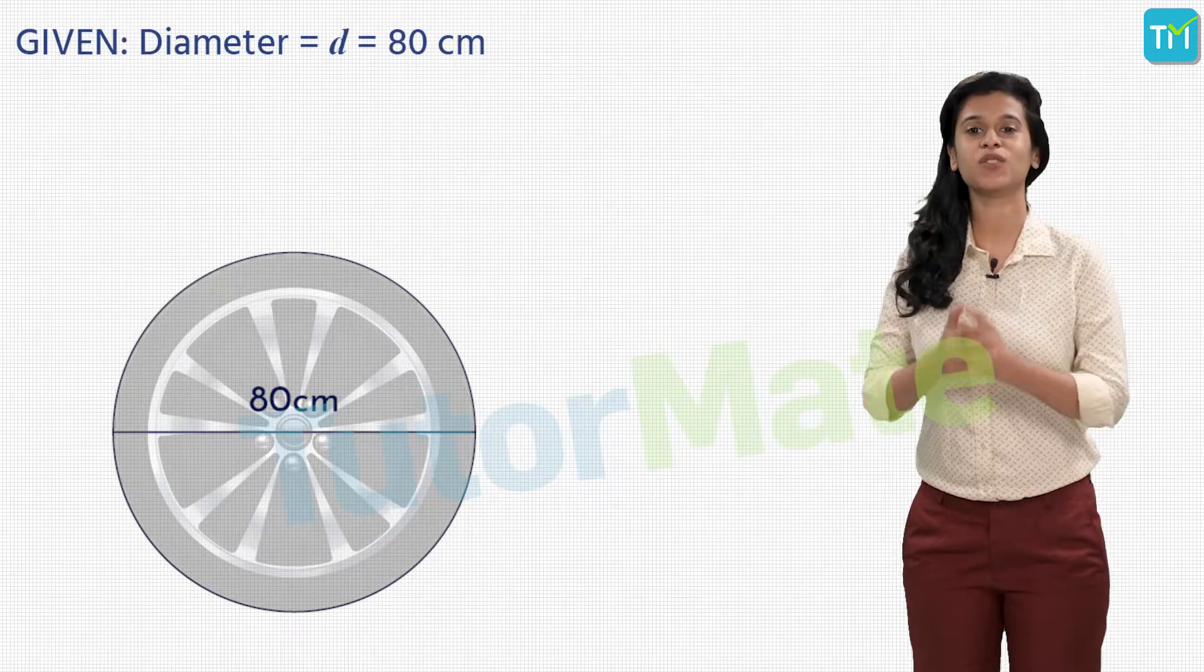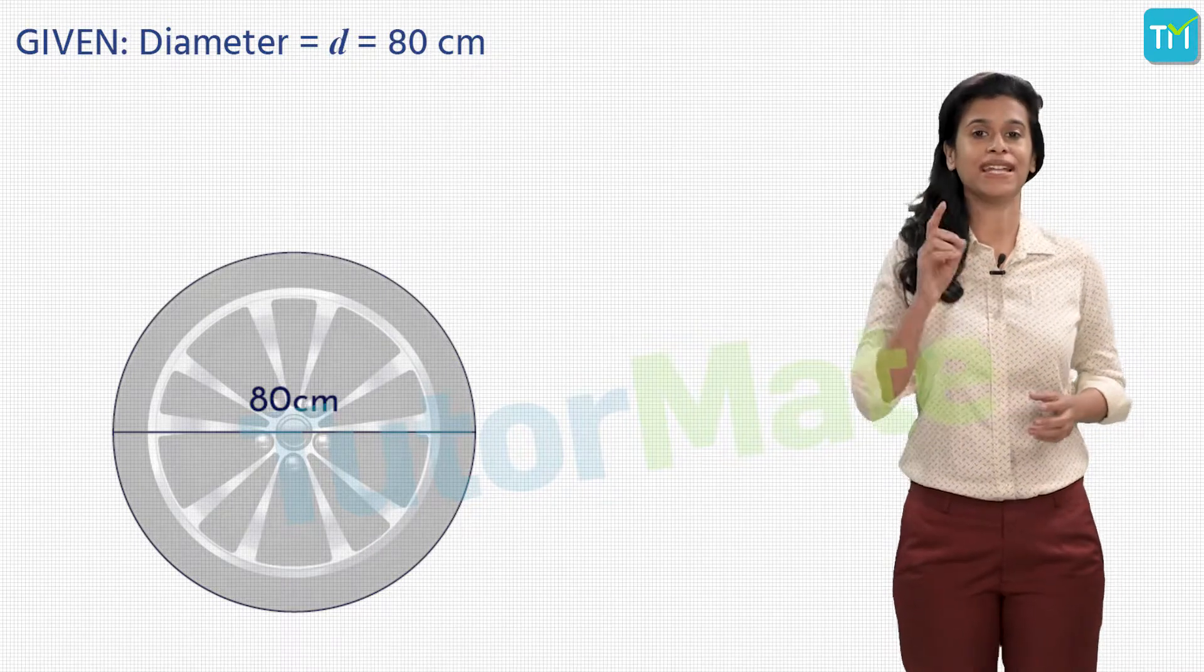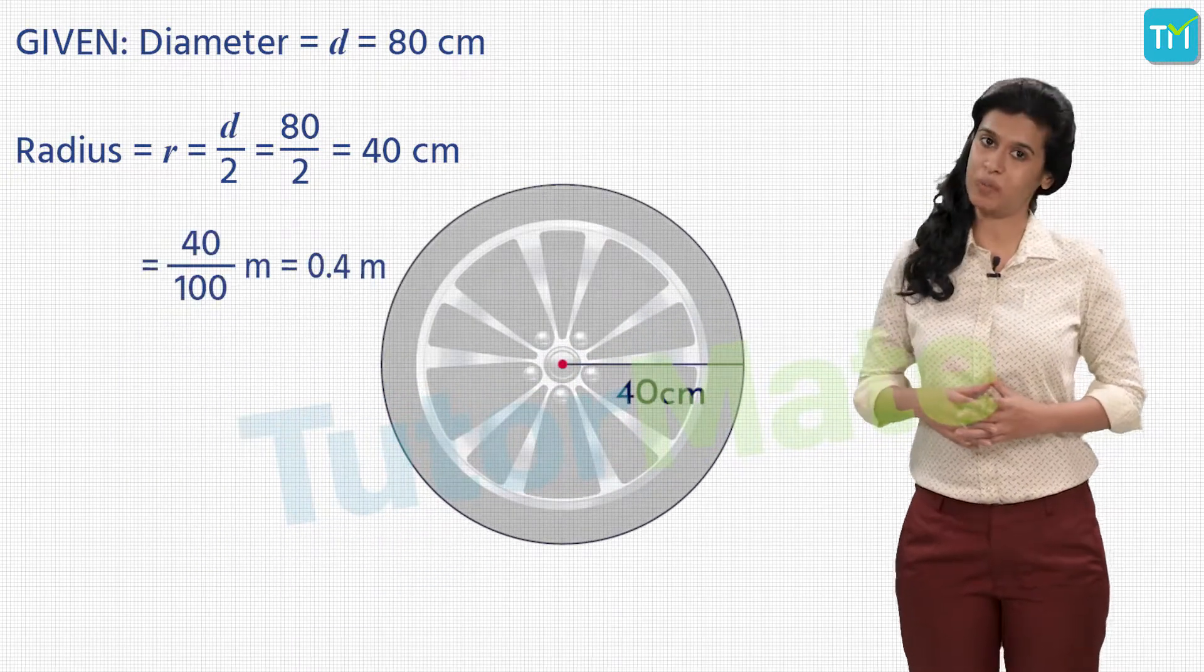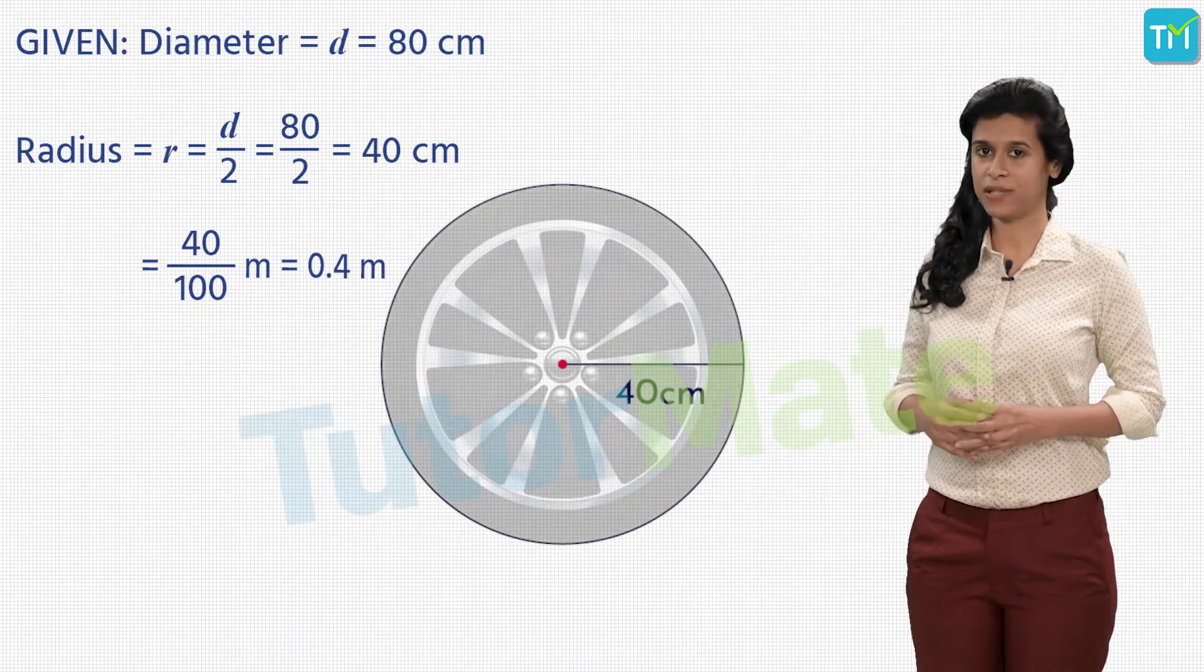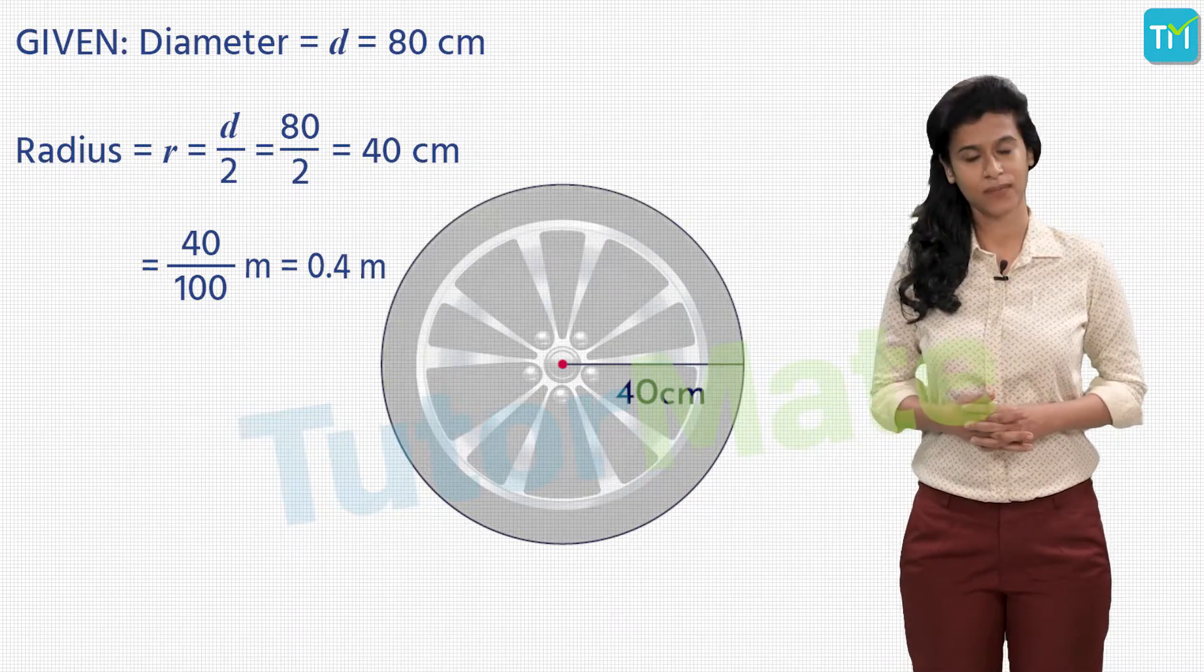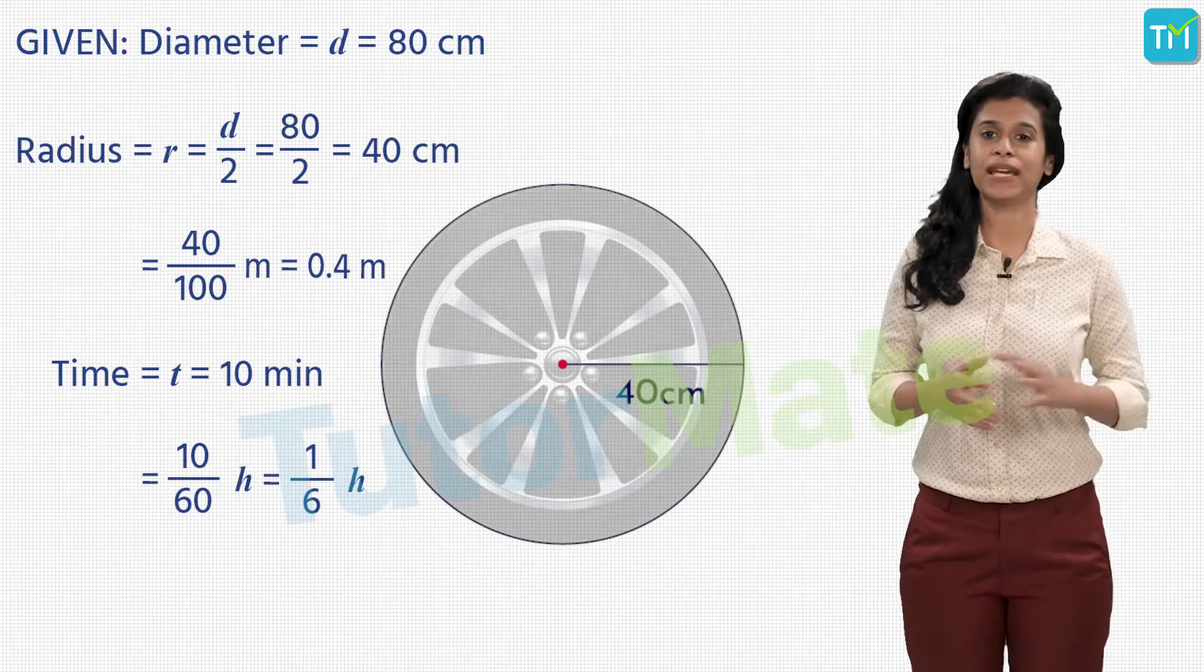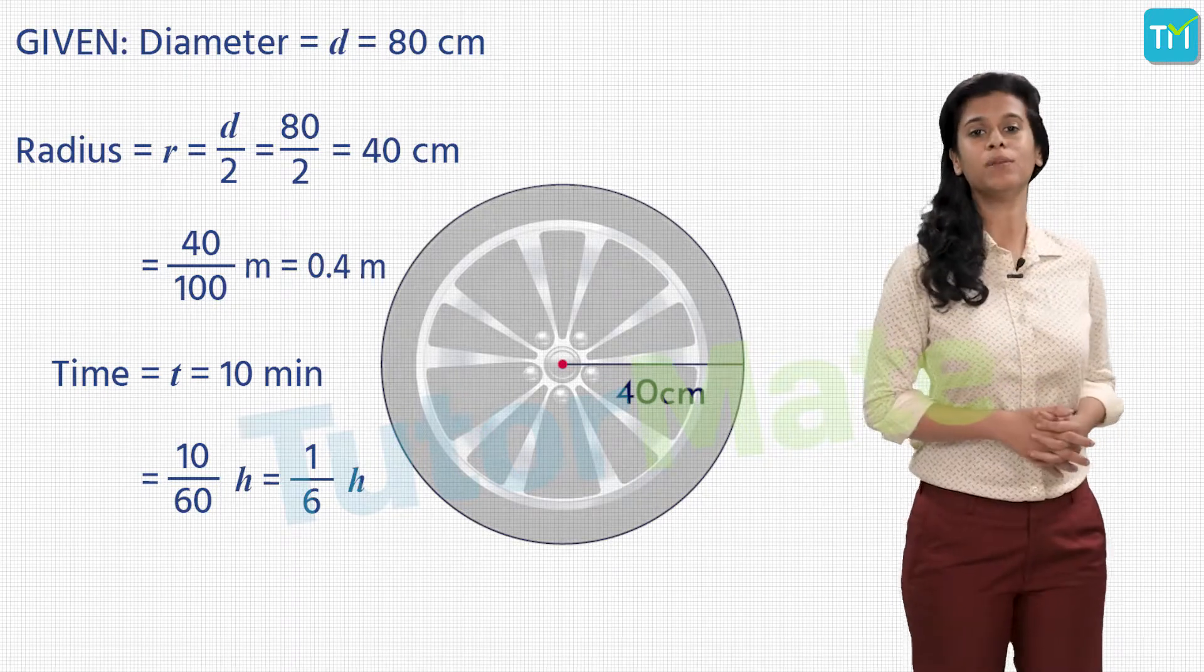First, let's note down what is given. The diameter of the wheel is 80 centimeters, therefore its radius is 80 by 2, equal to 40 centimeters. We will convert centimeters into meters by dividing by 100, so 40 centimeters equals 0.4 meters. The time given is 10 minutes. Let's convert it into hours by dividing by 60, so time t equals 10 upon 60 hours, that is 1 by 6 hours.